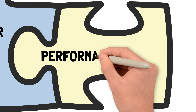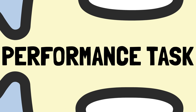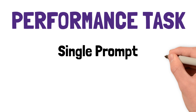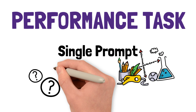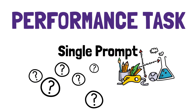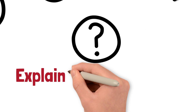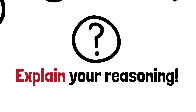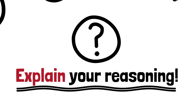The second part of the test is called the performance task, and that's what we're really going to focus on today. The performance task consists of a single prompt that describes a situation, and then asks three to six questions about that prompt. Now, at least one of those questions will require you to explain your reasoning, and this is arguably the most important question when it comes to improving your score.